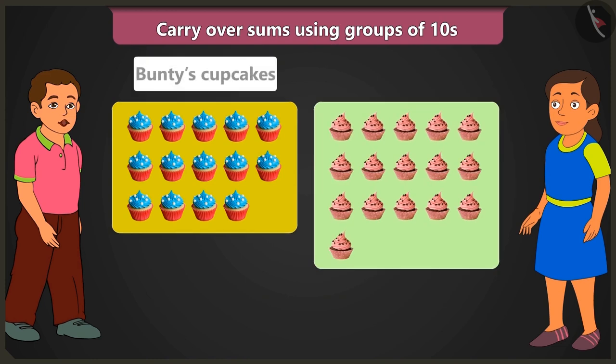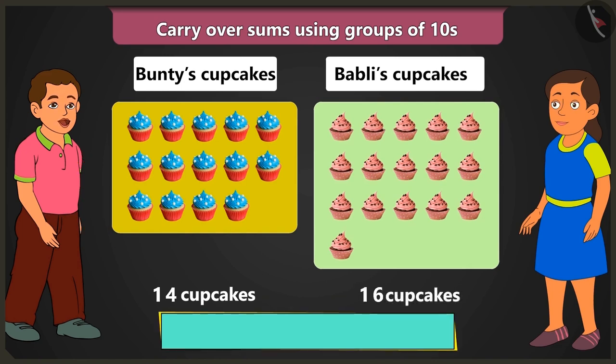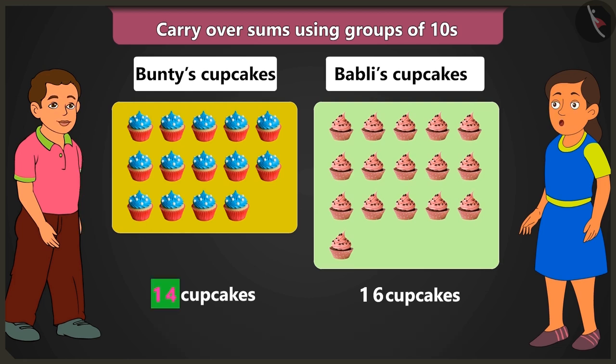Look Bubbly, I have fourteen cupcakes and you have sixteen cupcakes. So how many cupcakes do we have in all? Fourteen means there is one ten and four ones cupcakes, and for sixteen there is one ten and six ones cupcakes.